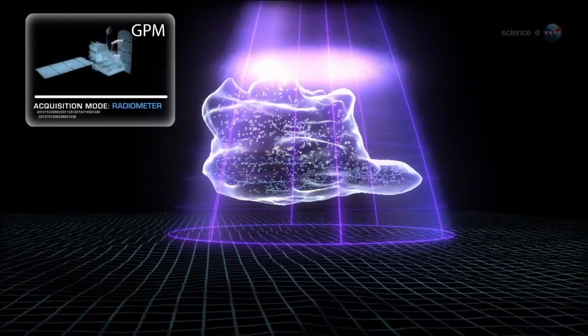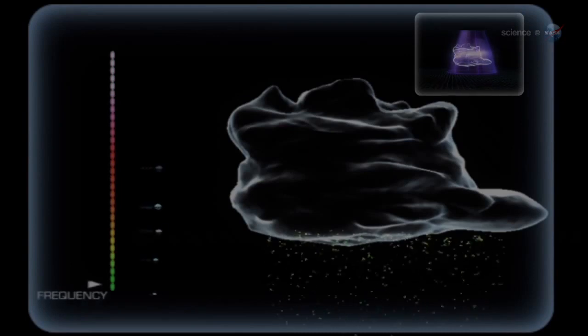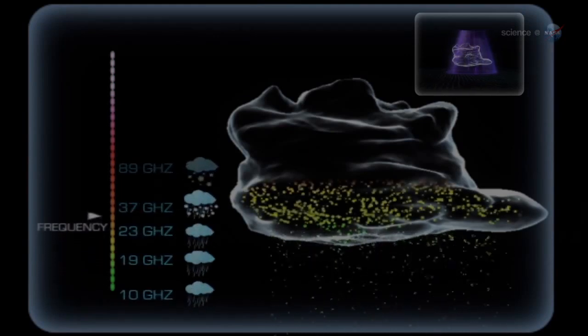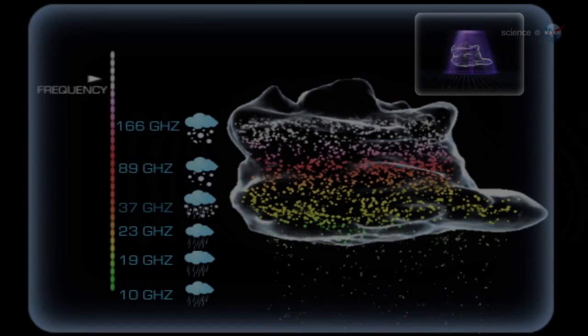The Microwave Imager will measure not only heavy and moderate rain, as other satellites do, but also light rain and snow—two forms of precipitation important over mountain ranges and high-latitude sites in North America, Europe, and Asia.